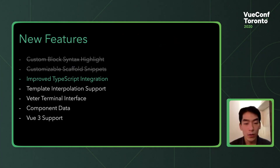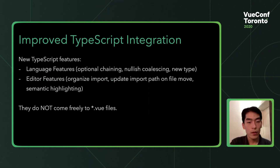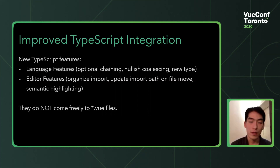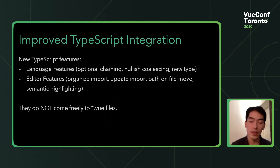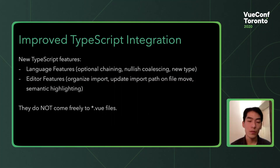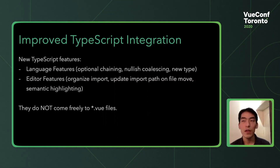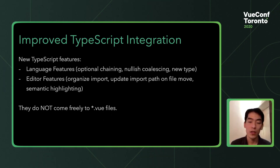Now I want to talk about the improved TypeScript integration I've spent the past two years on. Every three months TypeScript releases a new version with improvements — either language features like optional chaining and nullish coalescing, or editor features like organizing imports or updating import paths on file move. Some people think that because Vetur is based on TypeScript language server, it's very easy to take those features and apply them to Vue files. The truth is, it requires a lot of custom integration to make these features work on Vue files.